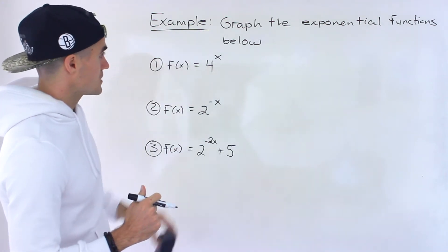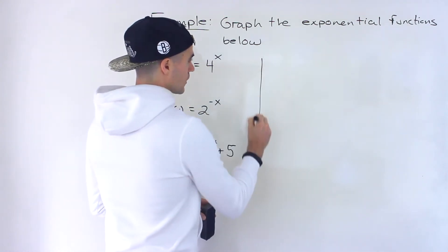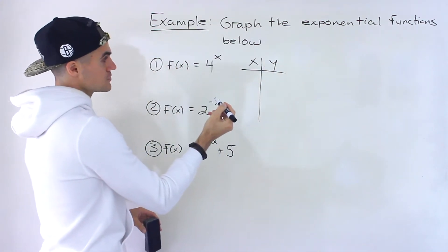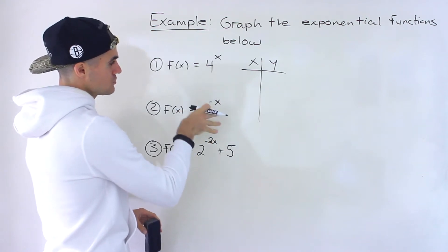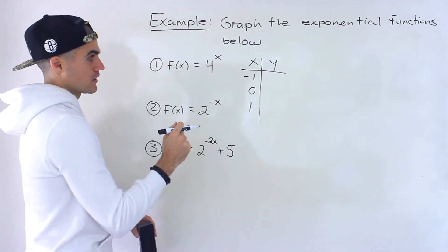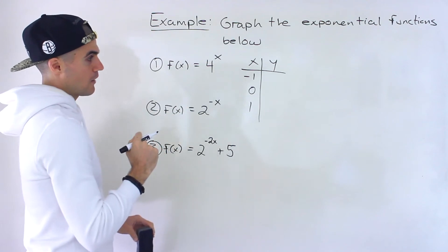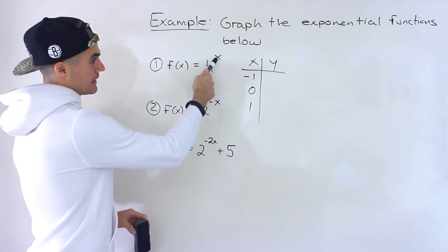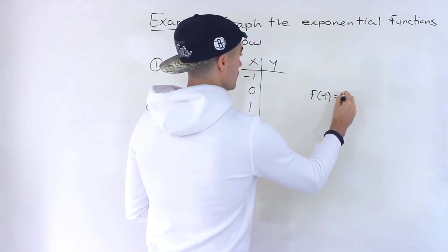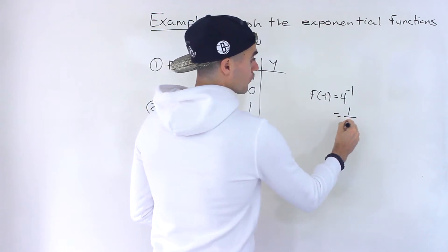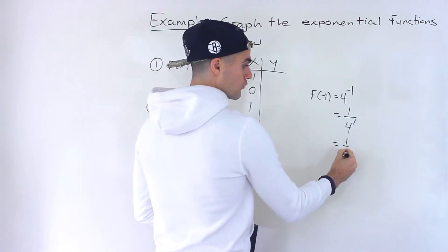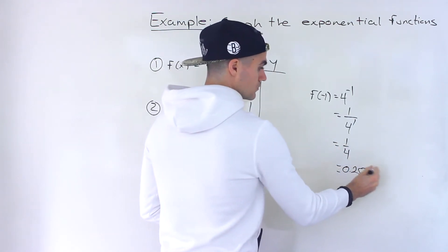Starting with number one, we have f(x) = 4 to the power of x. I'm going to pick three x values to work with. With exponential functions, I usually choose negative one, zero, and positive one — to see what's happening around the y-axis. If we plug in negative one, f(-1) = 4 to the power of negative one, which is 1 over 4 to the power of positive one. We change the exponent to a positive, giving us one-fourth, which is 0.25.